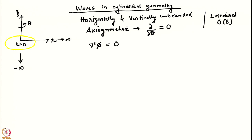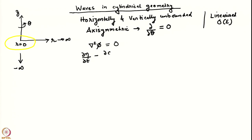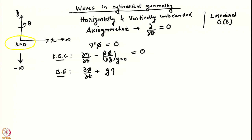We just have to write the Laplace equation in cylindrical axisymmetric coordinates. Earlier we wrote it in Cartesian coordinates; now we write it in cylindrical axisymmetric coordinates. The form of the kinematic boundary condition and the Bernoulli equation remains the same: ∂η/∂t − ∂φ/∂z at z = 0 is 0 (the linearized kinematic BC), and ∂φ/∂t + gη = 0 at z = 0 (the linearized Bernoulli equation), obtained by setting air pressure to 0 and ignoring nonlinear terms.